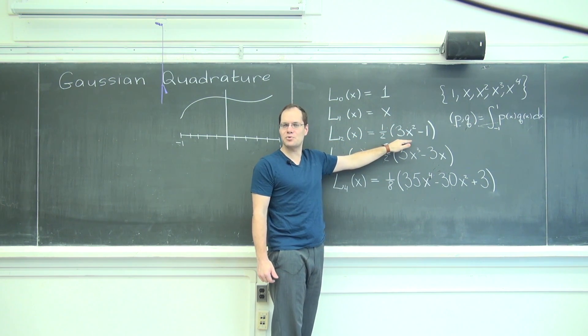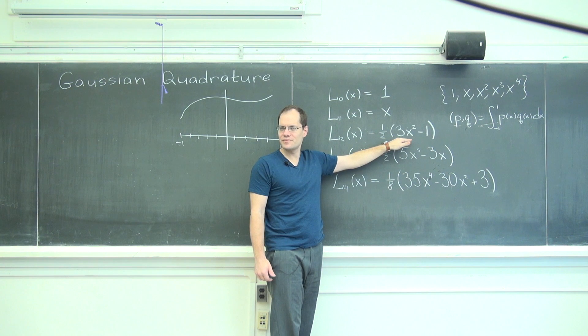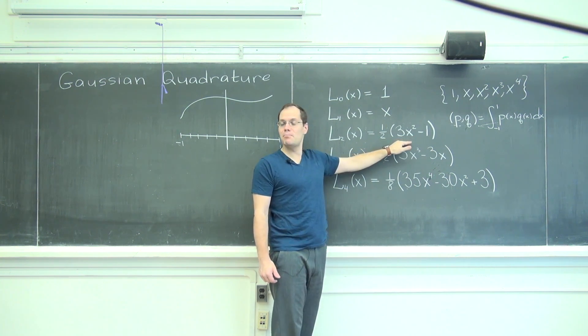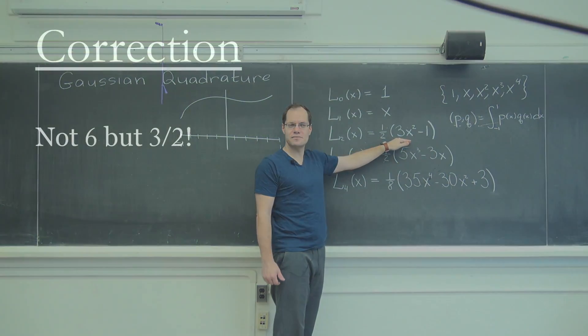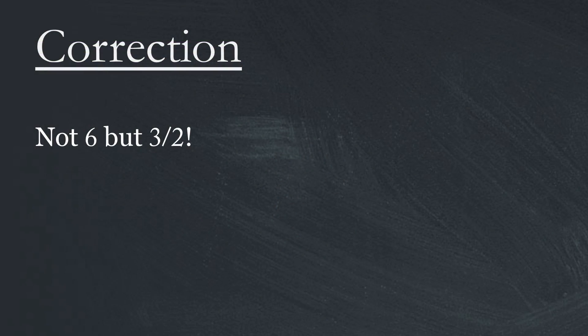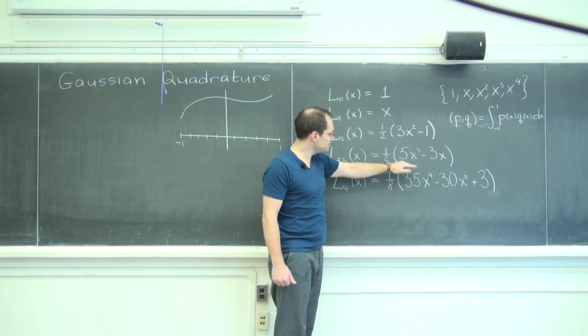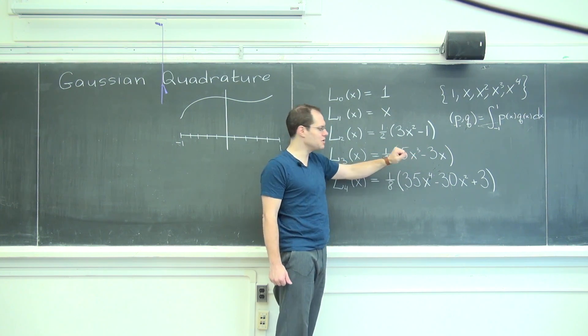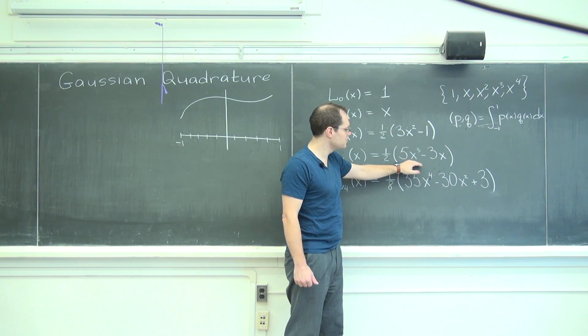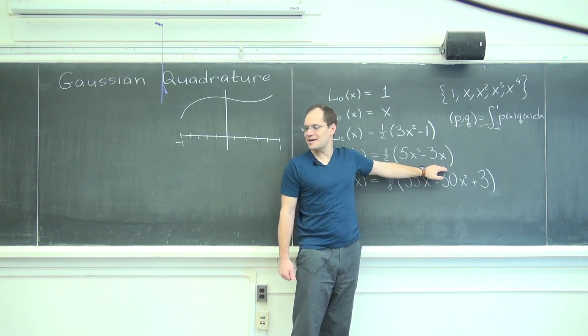We started with 1, the next one was x so there is a match, but the next one was x squared minus one-third. You see that this one is a multiple of what we discovered - it's six times the polynomial that we discovered. Then we didn't go this far, but if we had gone this far we would have ended up with x cubed minus three-fifths x.